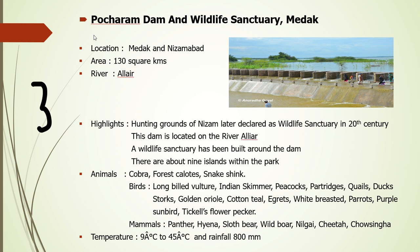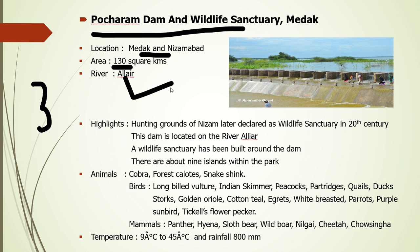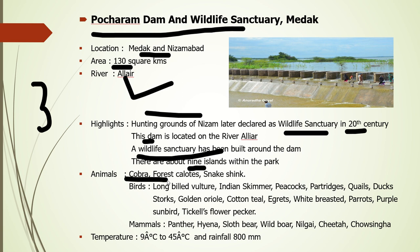The third is Pocharam Dam Wildlife Sanctuary, located in Medak and Nizamabad district. Its area is 130 square kilometers and the R.A. river is present. Before becoming a wildlife sanctuary, it was a hunting ground of the Nizam. It was declared a wildlife sanctuary in the 20th century. A dam was constructed on the river and the wildlife sanctuary was built around it. A main attraction is that there are nine islands within this park. Main indicator species include cobra, forest cats, and snake skins, along with various other animals.